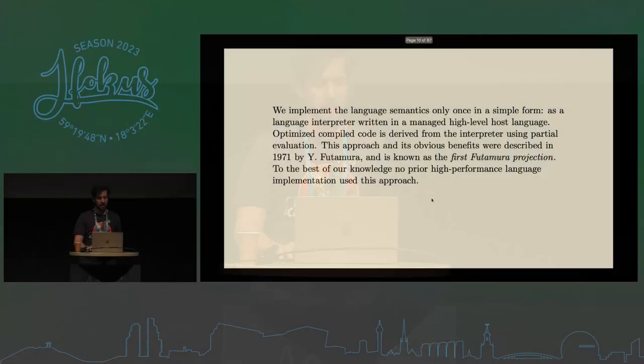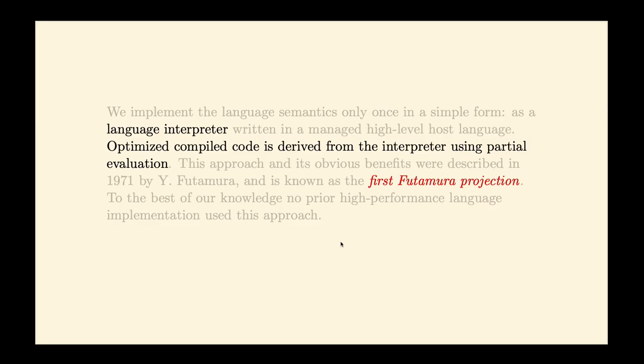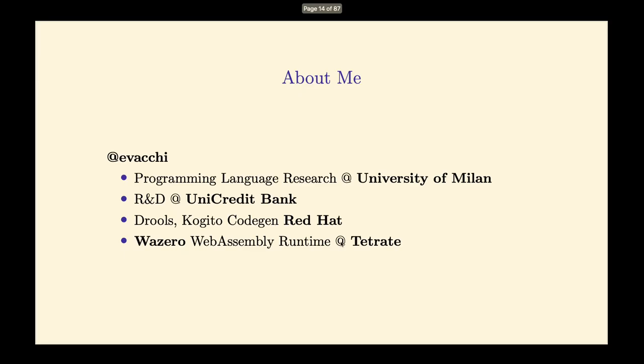They present a way to make it practical by deriving the compiler from the interpreter directly, using a technique that's called partial evaluation — a technique known as the first Futamura projection, from a 1983 paper. We're going to go through a part of this paper.